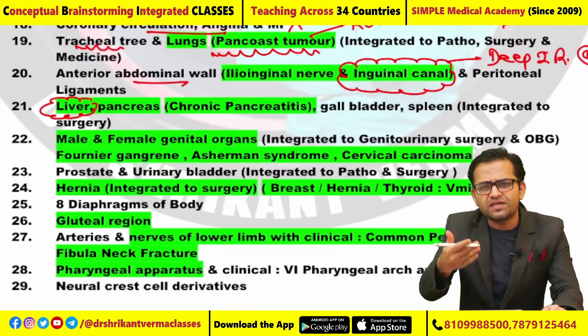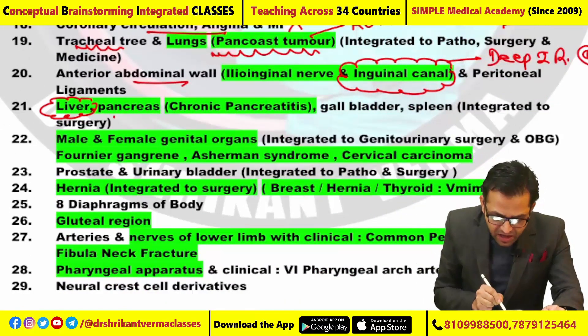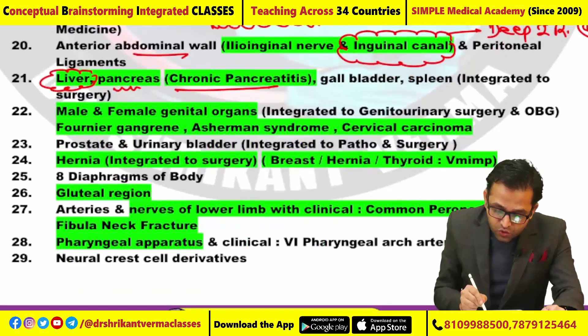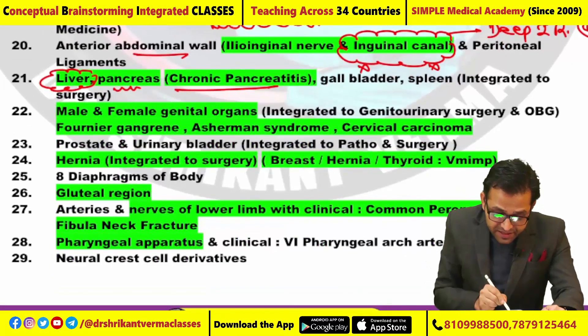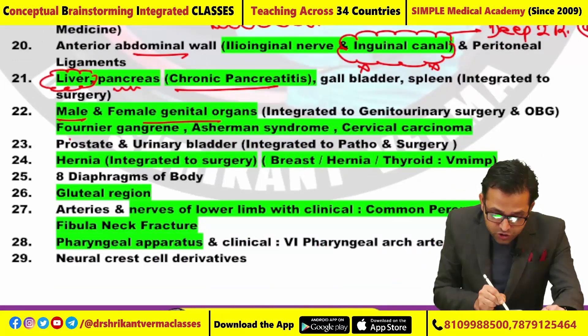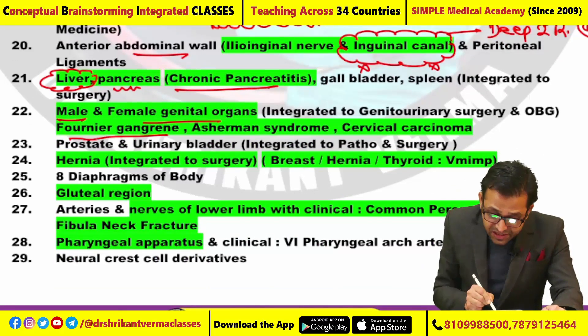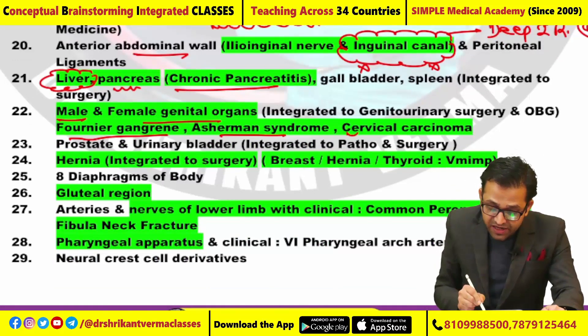The liver — the hepatitis joint pattern is asked. This time chronic pancreatitis question had been asked. No question from the gallbladder and the spleen. For male and female genital organs, right now there was Fournier's gangrene, and in female Asherman's syndrome, and approximately four questions regarding the cervical carcinoma.